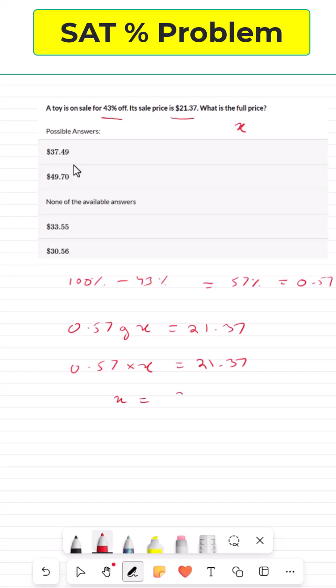X just becomes 21.37 divided by—we are going to take it to the other side. So it's divided since it's being multiplied here. So it's 21.37 divided by 0.57.